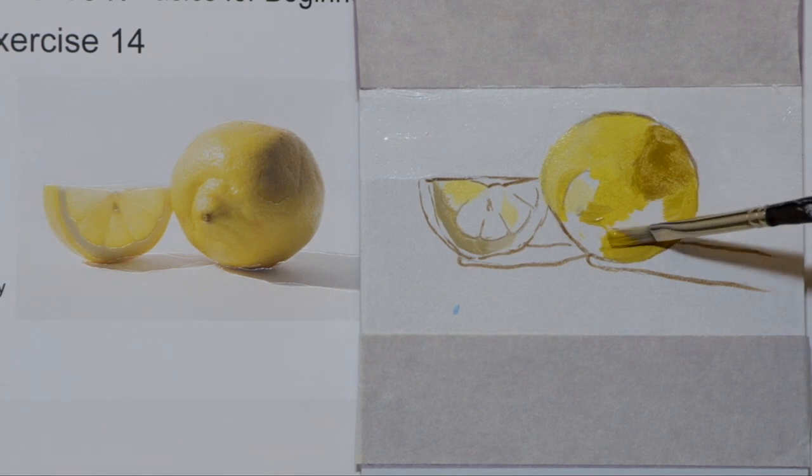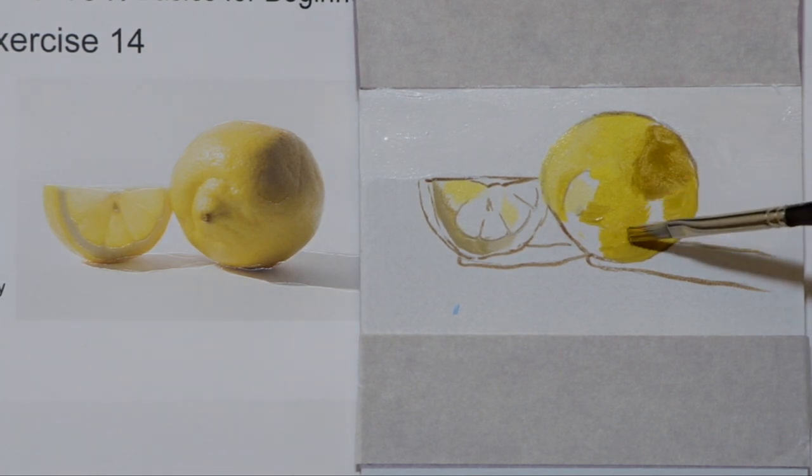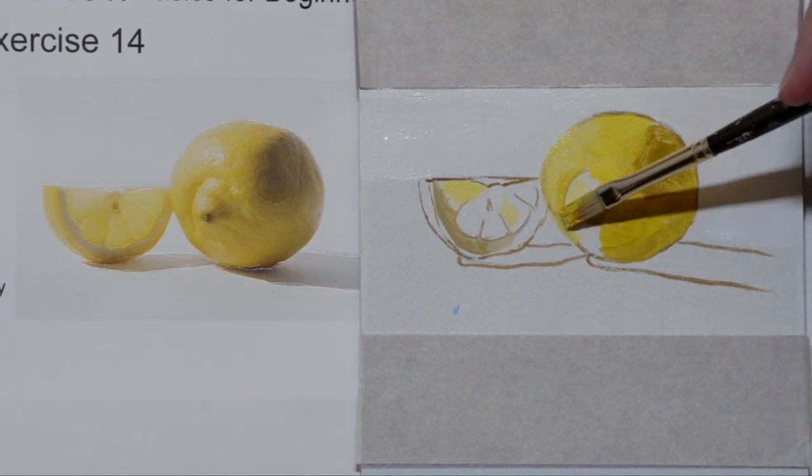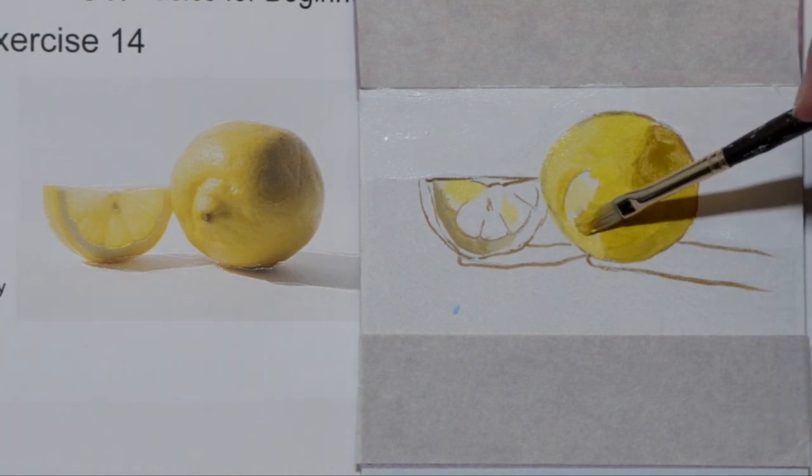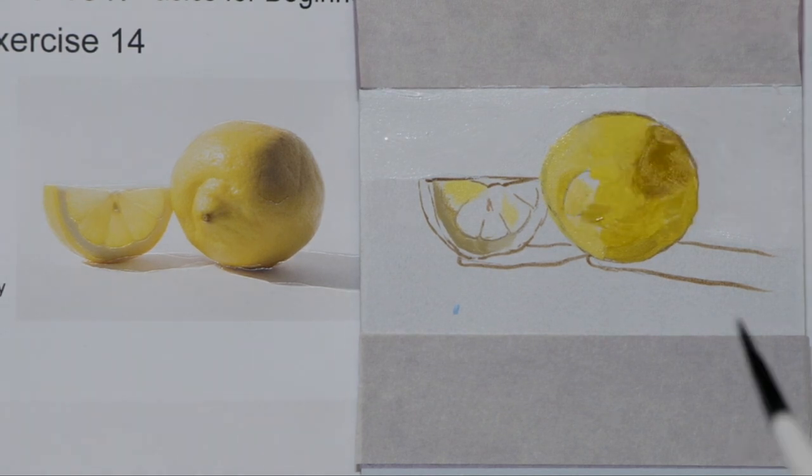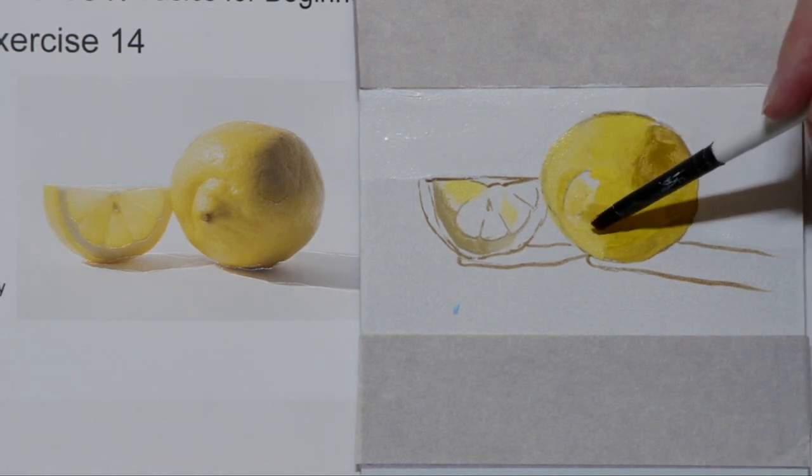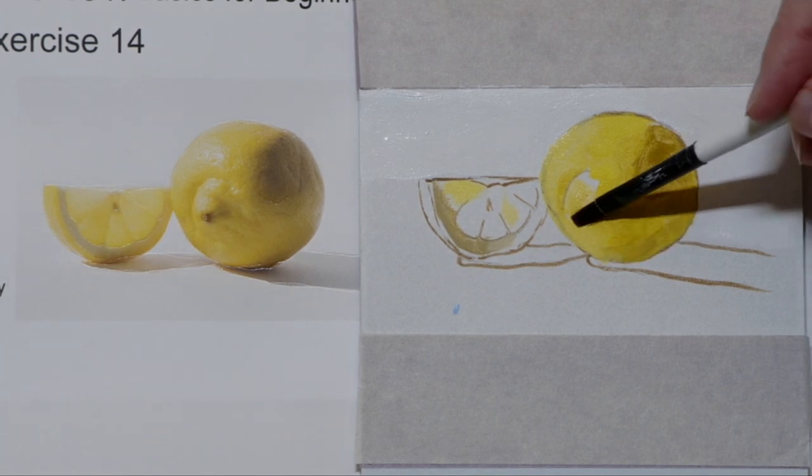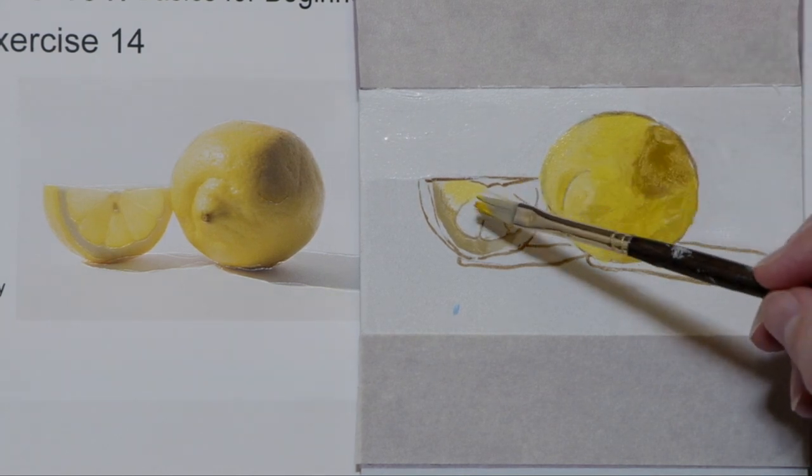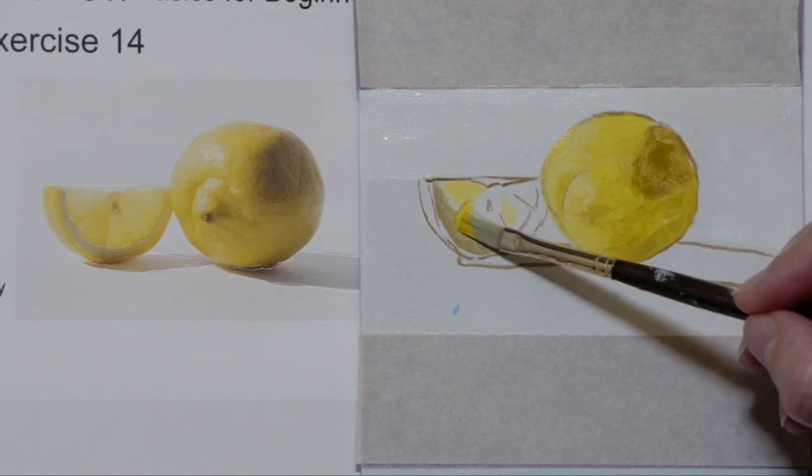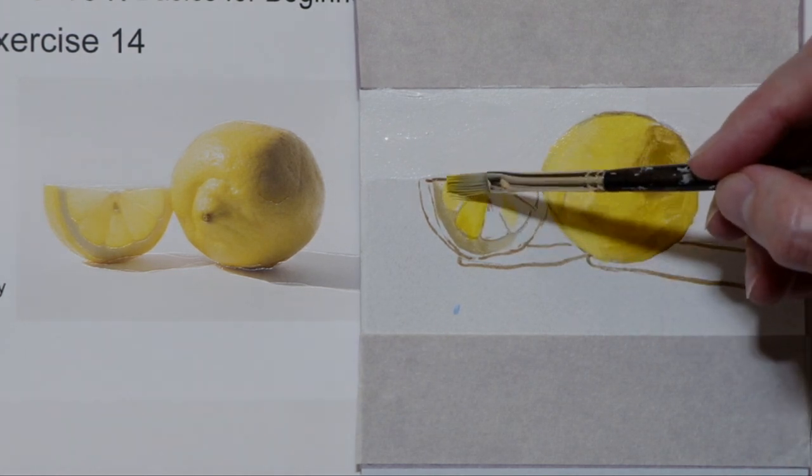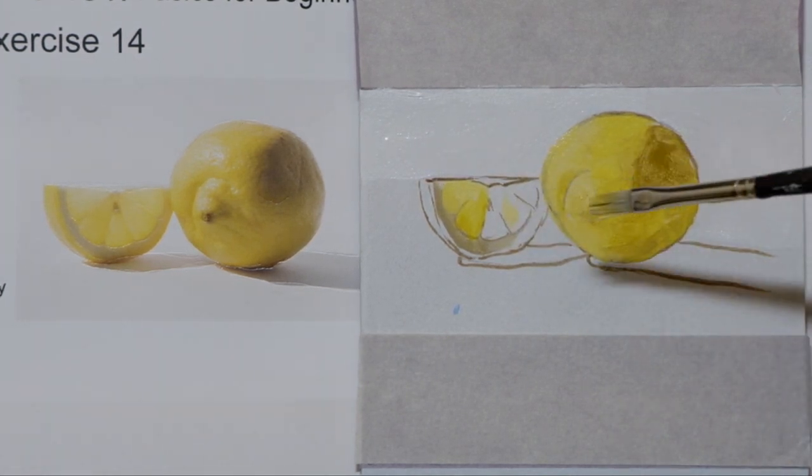And I continue to build up and you'll notice that I'm even moving my brush in the roundness of the lemon. I want to create that illusion of roundness. I'm coming in and softening it and coming in and working on the lemon slice. Now the lemon slice is interesting because it's backlit just enough and has some really interesting glow in the segments.